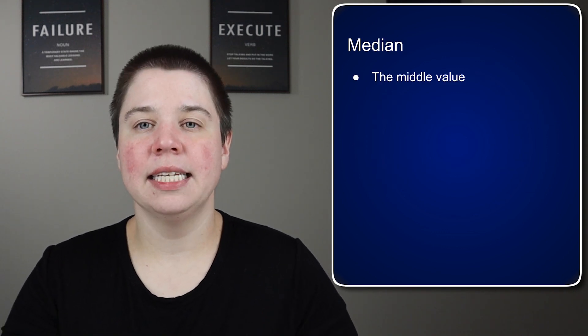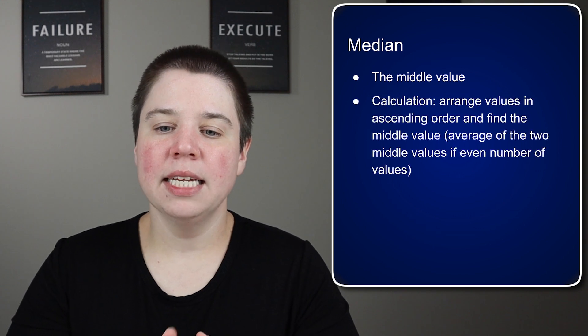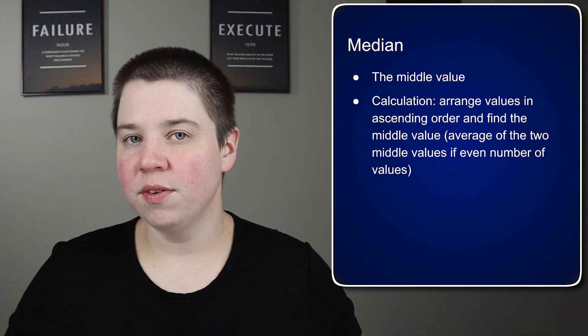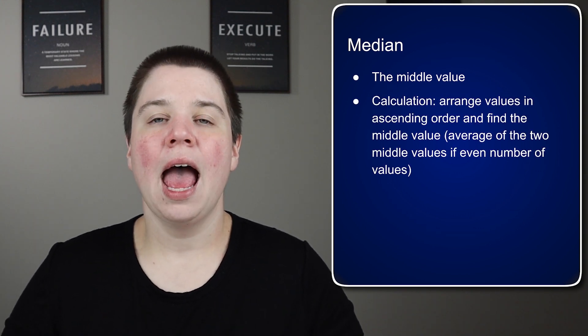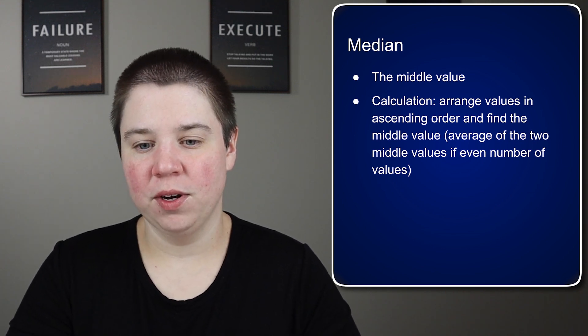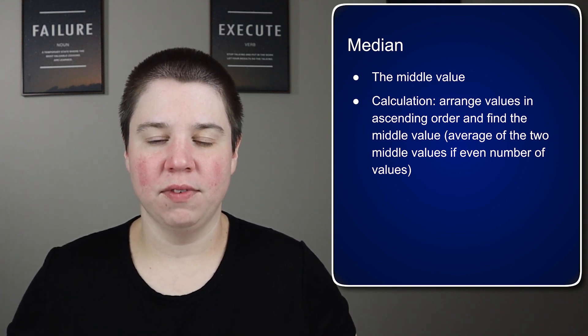Your median, on the other hand, is the middle value. It is calculated by arranging all of your values in ascending order and then finding the middle value or the average of the two middle values if you have an even number of values.